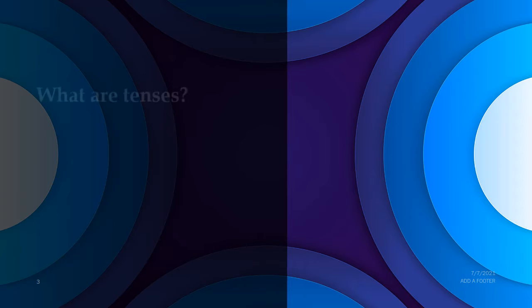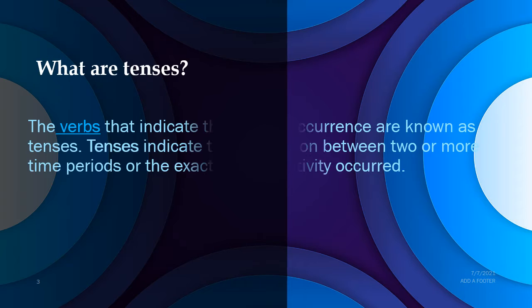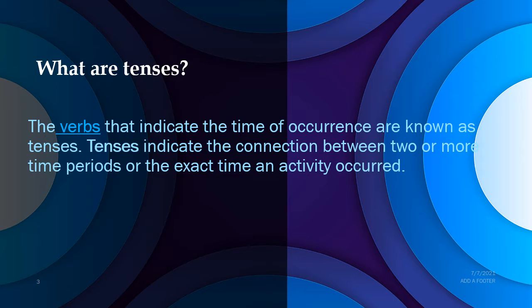Now coming to the topic tenses — what are tenses? The verbs that indicate the time of occurrence are known as tenses. Tenses indicate the connection between two or more time periods or the exact time an activity occurs. Tenses means the verbs that denote the time, and the duration of the activity can be easily conveyed only through tenses.